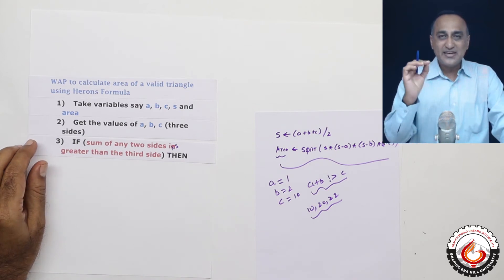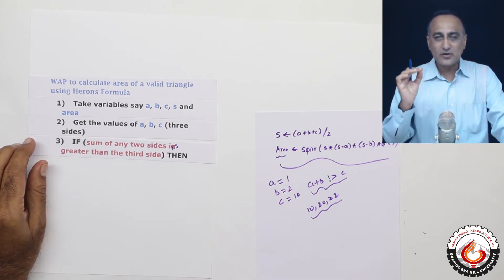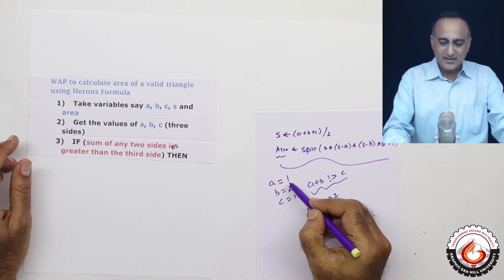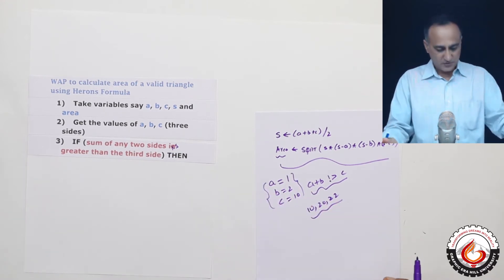Otherwise, I am going to print a message invalid sides or invalid triangle to the user so that he knows that he has entered wrong values of the three sides A, B and C.